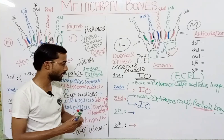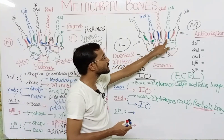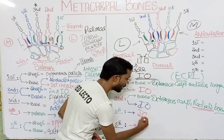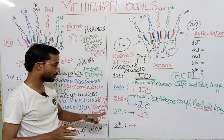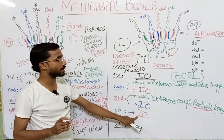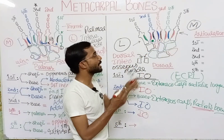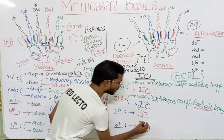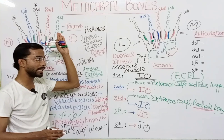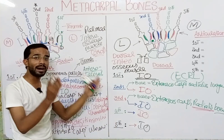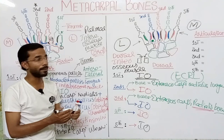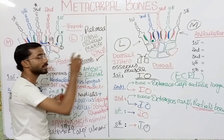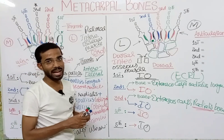At the fourth metacarpal on the dorsal aspect, the interosseous muscle is the main attachment — no other muscles attach, just the interosseous muscle. Similarly, at the fifth metacarpal you again see the interosseous muscle attachment. Interosseous muscles are present between all metacarpals, with the exception that the third metacarpal has no palmar interosseous muscle.